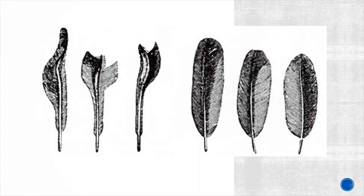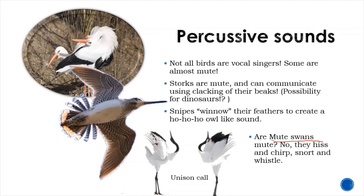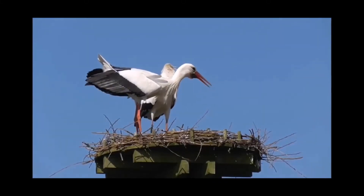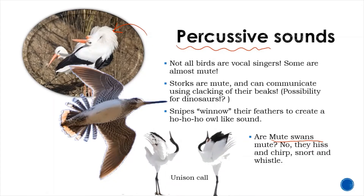Not all birds are vocal singers — some are almost mute. After all, we have an animal called the Mute Swan, who isn't actually mute: they can hiss and chirp and snort and whistle. Those things are called percussive sounds and are usually created by clapping the beak together. Storks are mute but can communicate using clapping beaks. Imagine a dinosaur like Triceratops using a similar technique. Snipes also use their feathers to create a hoo-hoo winnowing-like sound. Some animals use clapping of feathers and beaks to create units of display, which are used in mating.